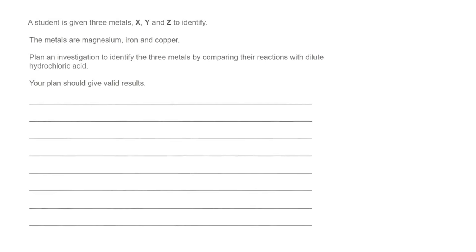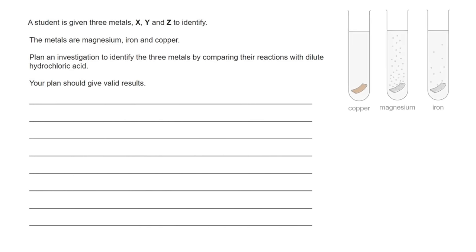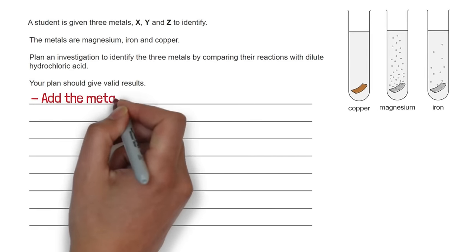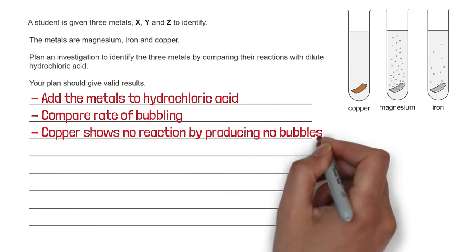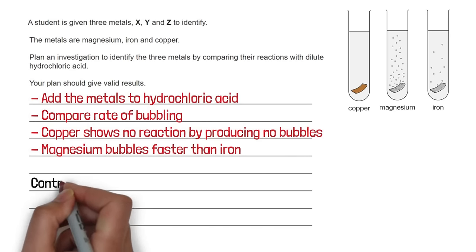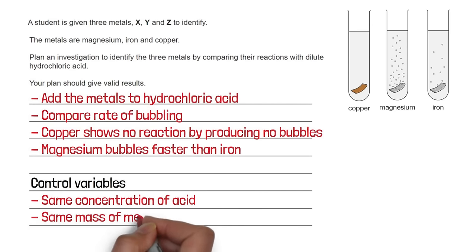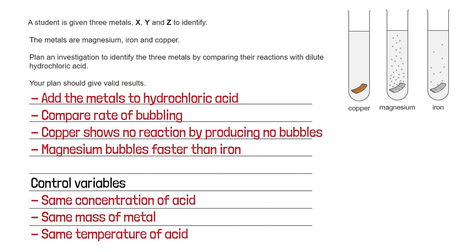A student is given three metals X, Y and Z — magnesium, iron and copper. Plan an investigation to identify them by comparing their reactions with dilute hydrochloric acid. Add each metal to HCl in separate test tubes and compare the rate of bubbling. Copper shows no reaction and no bubbles; magnesium produces a lot of bubbles; iron produces slightly fewer. Control variables: same concentration of acid, same mass of metal, same temperature of acid. Alternatively, measure the change in temperature — the higher the temperature change, the higher the reactivity, so the highest would be magnesium.